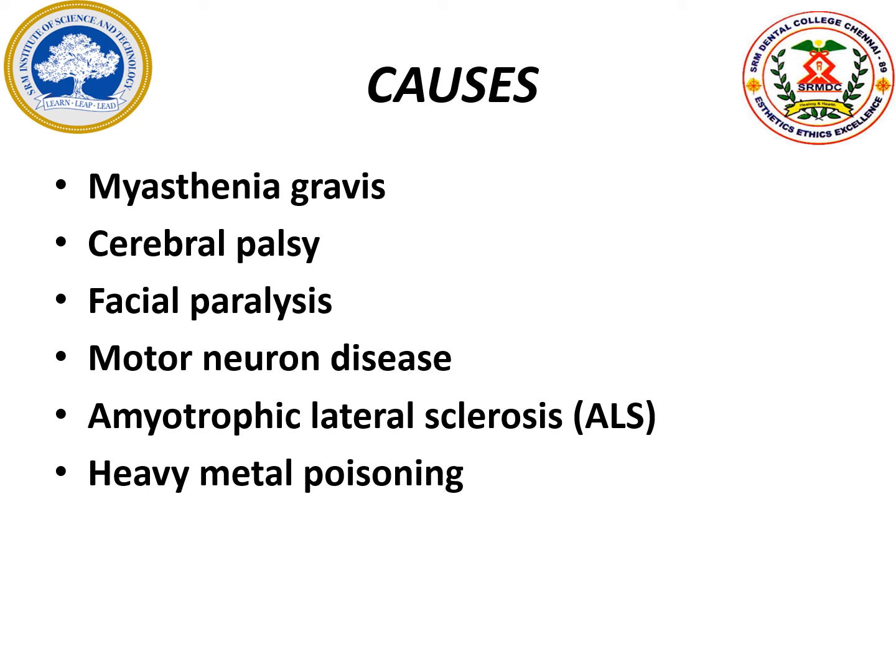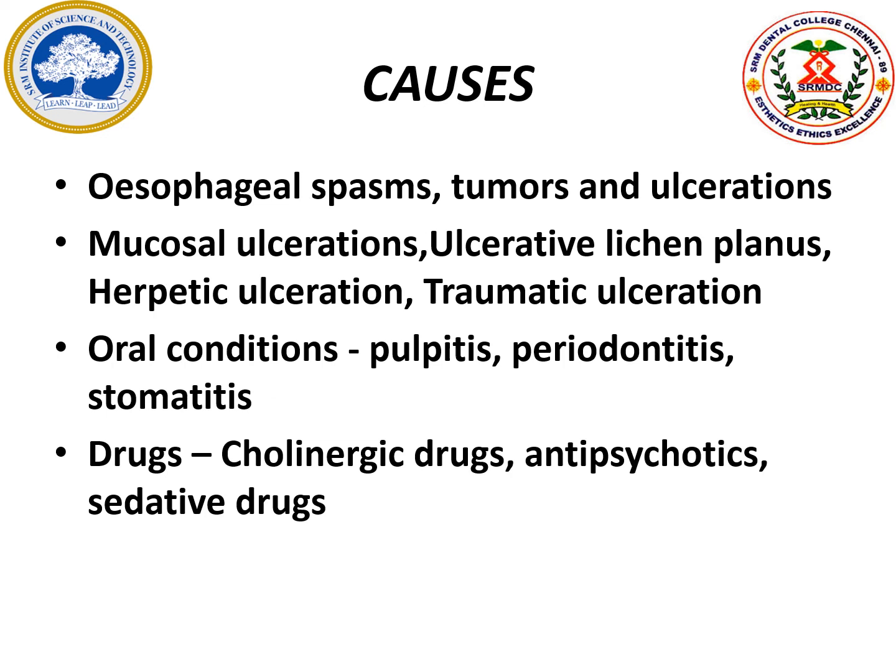What are the causes for sialorrhea and drooling? Many pathological conditions cause this — to name a few: myasthenia gravis, cerebral palsy, facial paralysis, motor neuron disease, amyotrophic lateral sclerosis, and heavy metal poisoning. Almost all heavy metal poisoning induces copious secretion of saliva, stimulating the salivary gland excessively. Other causes include esophageal spasms, tumors, and ulcerations. All painful oral conditions can also cause increased salivary secretions, such as herpes, pulpitis, periodontitis, and traumatic stomatitis.